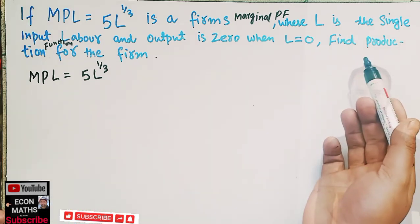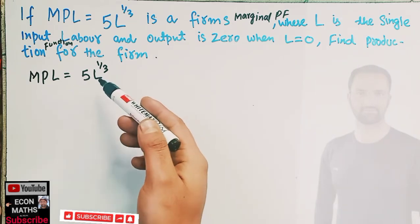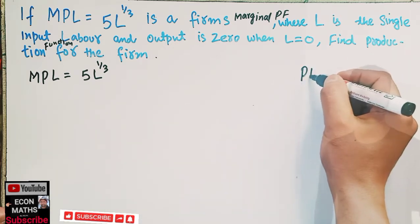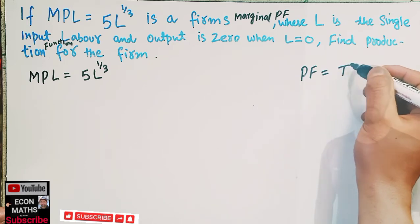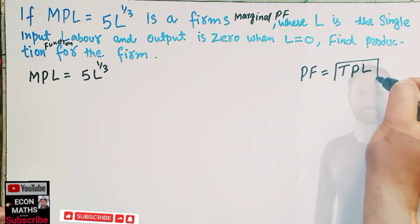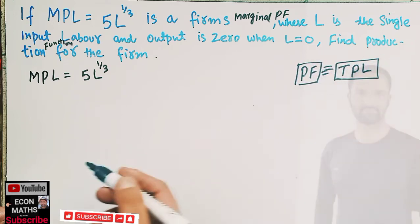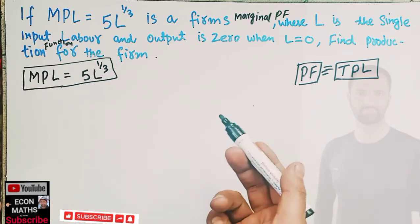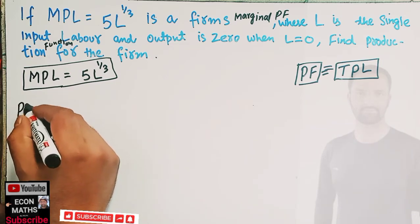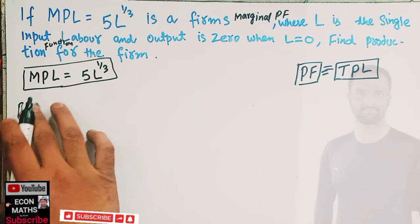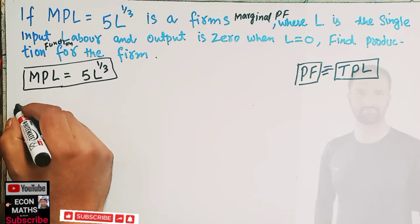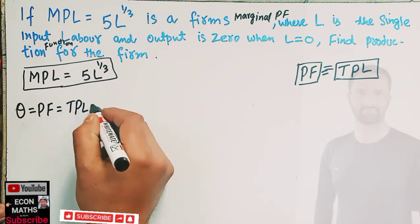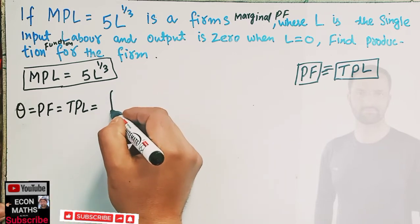Now to find the production function: since we have a single factor production function in terms of L, we can also say our production function can be called the total product of labor function. Total product of labor and the production function are equivalent here. We are given the marginal product of labor and we have to find the total product of labor, that means our production function. Q is our production function, which is our total product of labor.